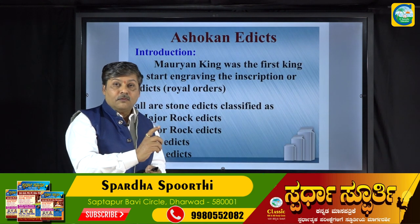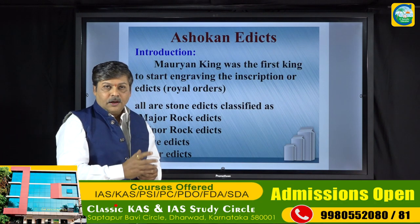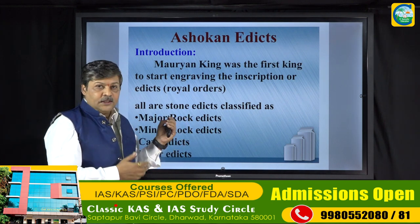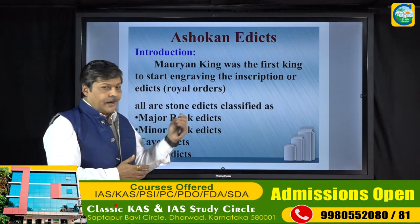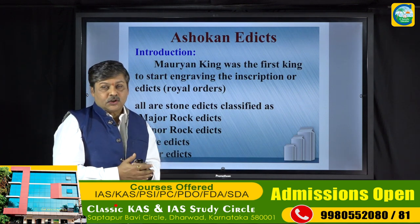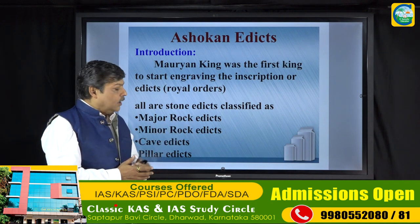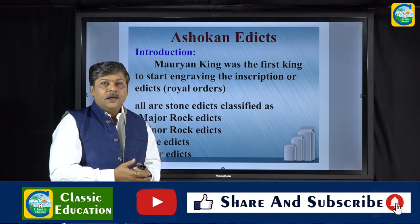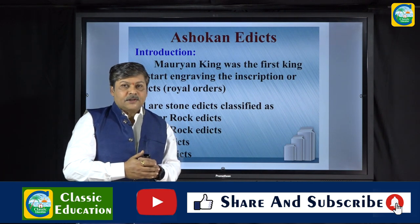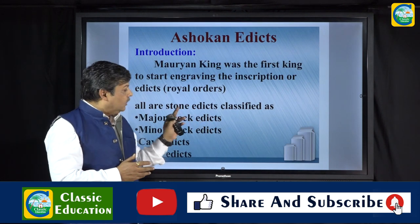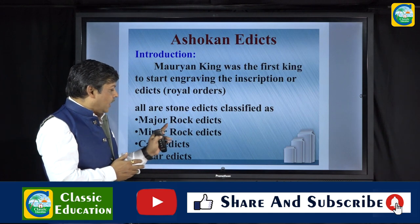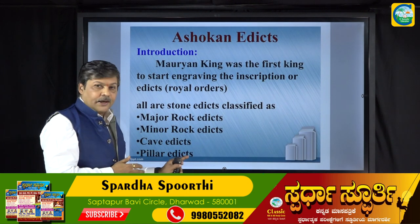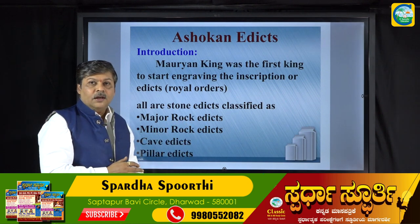Edicts means Royal Orders. The inscriptions are in the form of Royal Orders — orders issued by the Emperor himself. These Edicts are all stone Edicts, carved on stones. They have been classified as Major Rock Edicts, Minor Rock Edicts, Cave Edicts and Pillar Edicts. This is the classification of Ashoka's inscriptions.